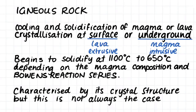If you're not sure about Bowen's reaction series or the different magma compositions that exist, then I would suggest you go and watch the last two videos of the previous section. In these videos we have a look at how magma forms and the different types of magma. This is quite important in order to understand igneous rocks because this is what igneous rocks form from.